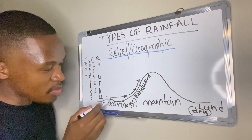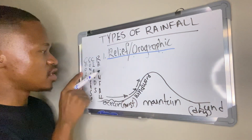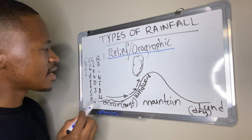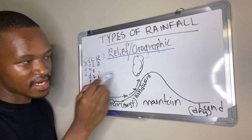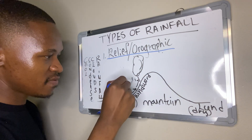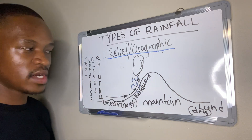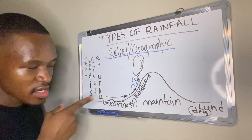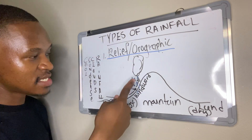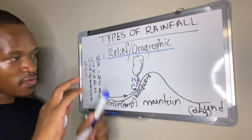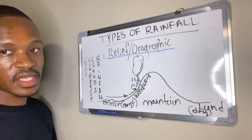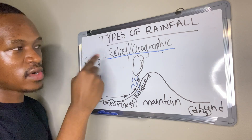So once our moist air rises against the mountain, it is going to cool and condense to form clouds, and clouds will bring about the rainfall. One more time: moist air from the ocean rises against the windward side of the mountain. As it rises, it cools and condenses to form clouds, and clouds bring about the rainfall on the windward side of the mountain. That's how relief or orographic rainfall happens.